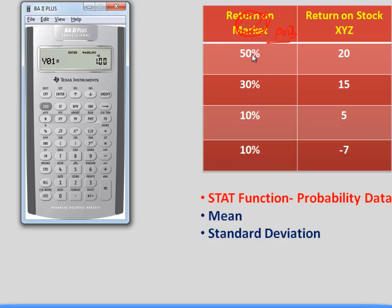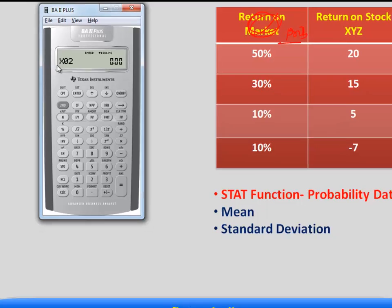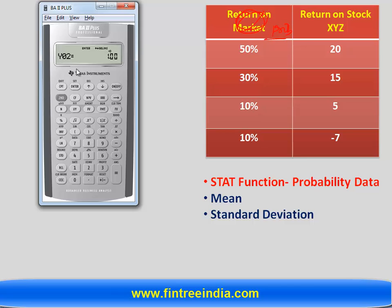and you don't have to enter them as percentage so simply say 50 enter pressing downward arrow X2 in this case is 15 enter Y2 in this case would be 30 percent so I'm going to simply enter as 30 enter X3 5 enter Y3 10 enter X4 7 negative enter and Y4 in this case should be 10 enter